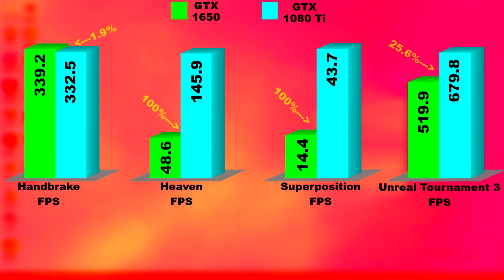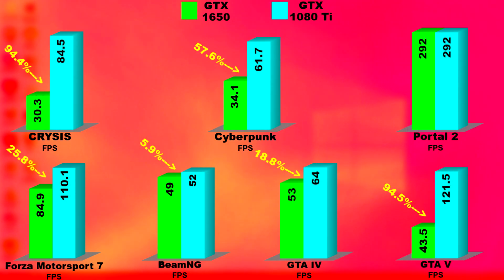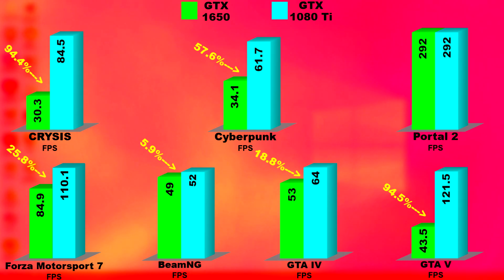I couldn't compare any of the previous results here with the current results since I used different settings this time. But regardless, you can see that in both Heaven and Superposition there was a 100% difference between the two cards, and similar results for many of the other tests. GTA 4, BeamNG, and Portal 2 had a bottleneck somewhere, causing the 1080 to not reach its full potential — however, the results were still pretty damn good. As always, I try to keep it quick and to the point. If you made it this far, thank you, I hope all is going well in your world, and I'll see you next time.